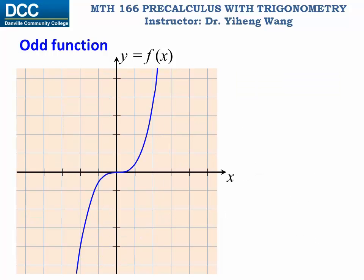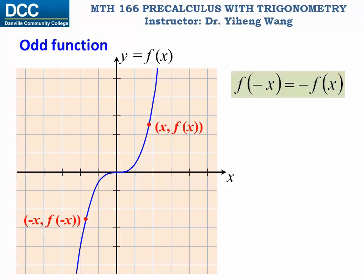Similarly, for an odd function, for a solution point at an arbitrary independent variable x, its y-coordinate must be f(x), the function value at x. Also, for another solution point at independent variable negative x, its y-coordinate must be f(-x) according to the definition of the function. But based on the symmetry, we can tell that f(-x) equals negative f(x). And this is again another important conclusion for us to determine if a function is an odd function or not algebraically.